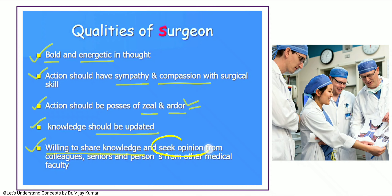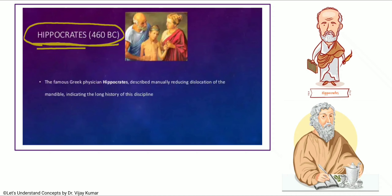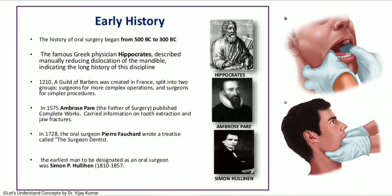Coming to the history of oral and maxillofacial surgery. It started in earlier times around 460 BC with Hippocrates. Hippocrates was a Greek physician who described the manual reduction of dislocated TMJ, which we still do today. The history of oral surgery begins from 500 BC to 300 BC, where the famous Greek physician Hippocrates described manually reducing the dislocation of the mandible.